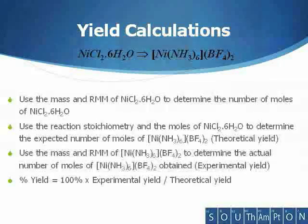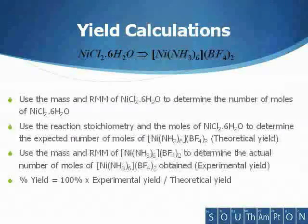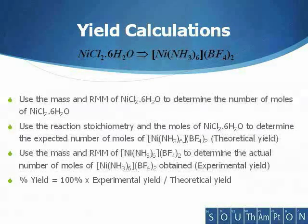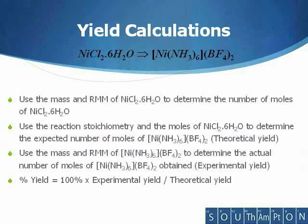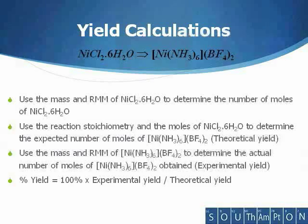From the weight of the hydrated nickel chloride used as a starting reagent, the number of moles of this compound may be determined. Reaction stoichiometry will enable you to then predict, in theory, how many moles of hexaamine nickel tetrafluoroborate would be produced. This is the theoretical yield — that is, the quantity produced from the complete conversion of the limiting reagent.